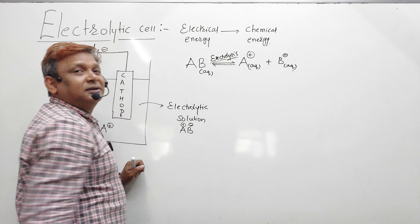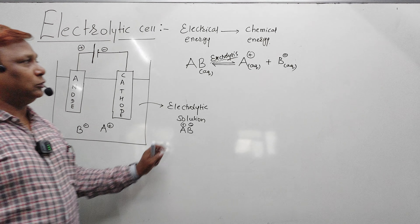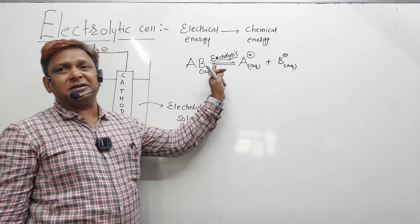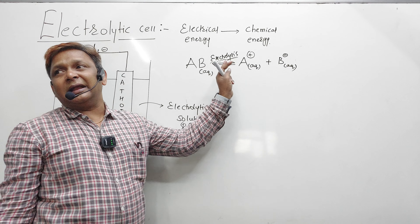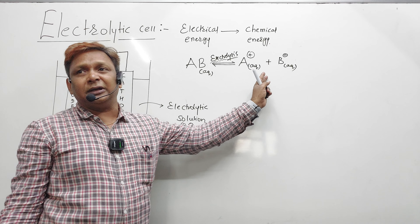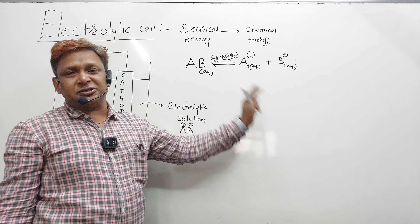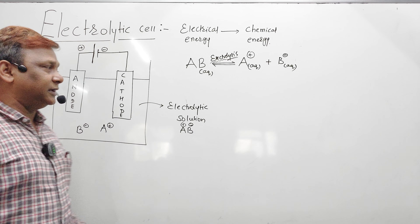The compound breaks by passing current. 'Electro' means passing current, 'lysis' means breaking of the compound into two different ions. So the process is called electrolysis.